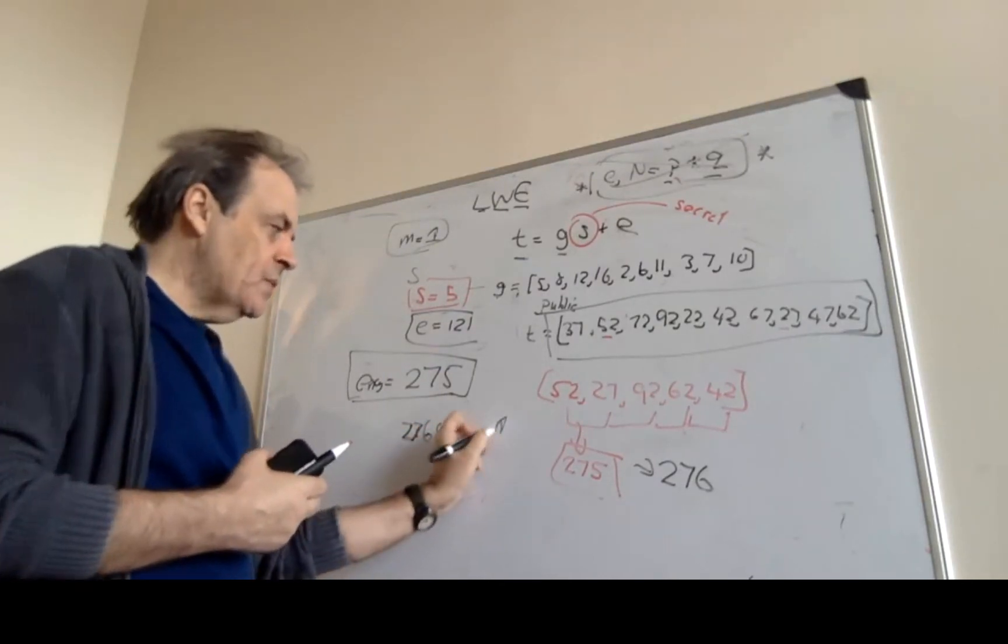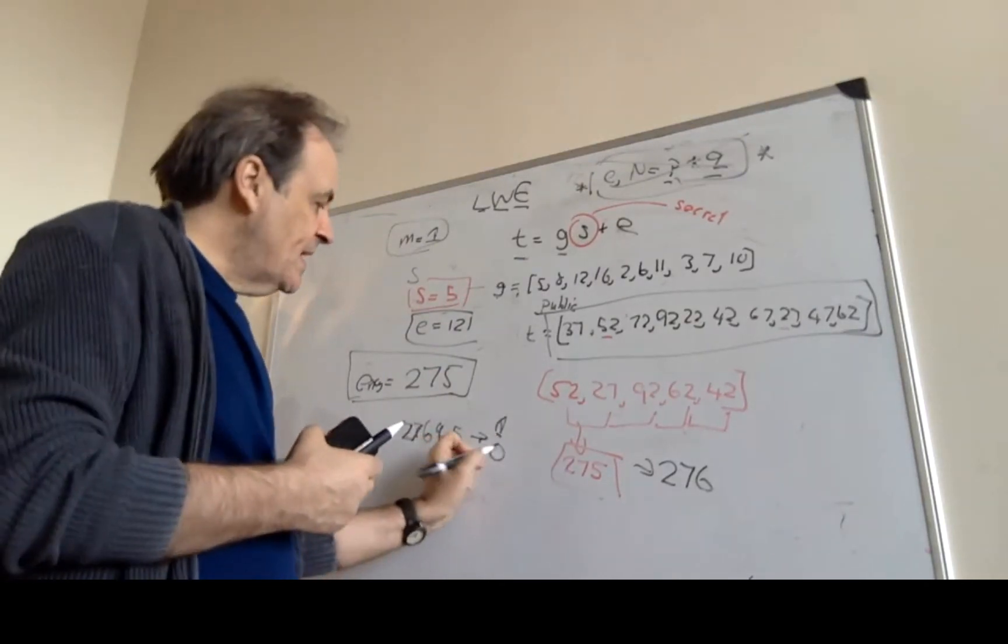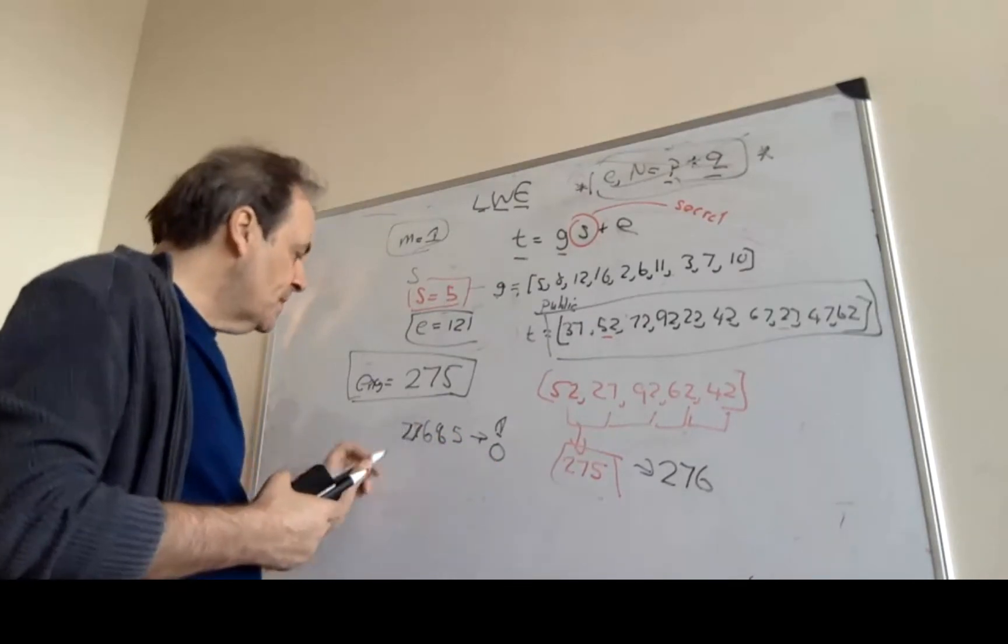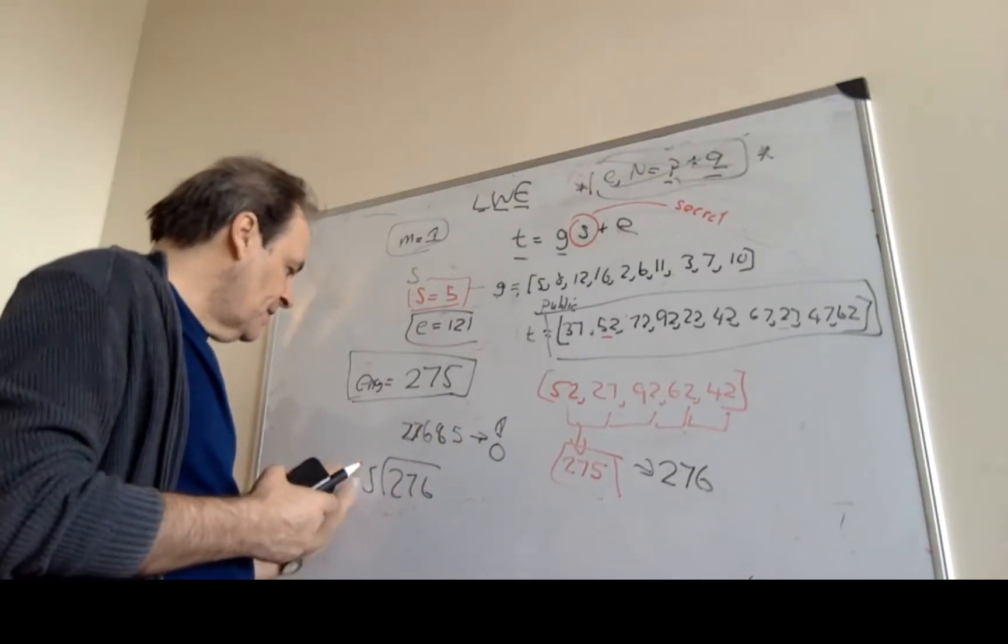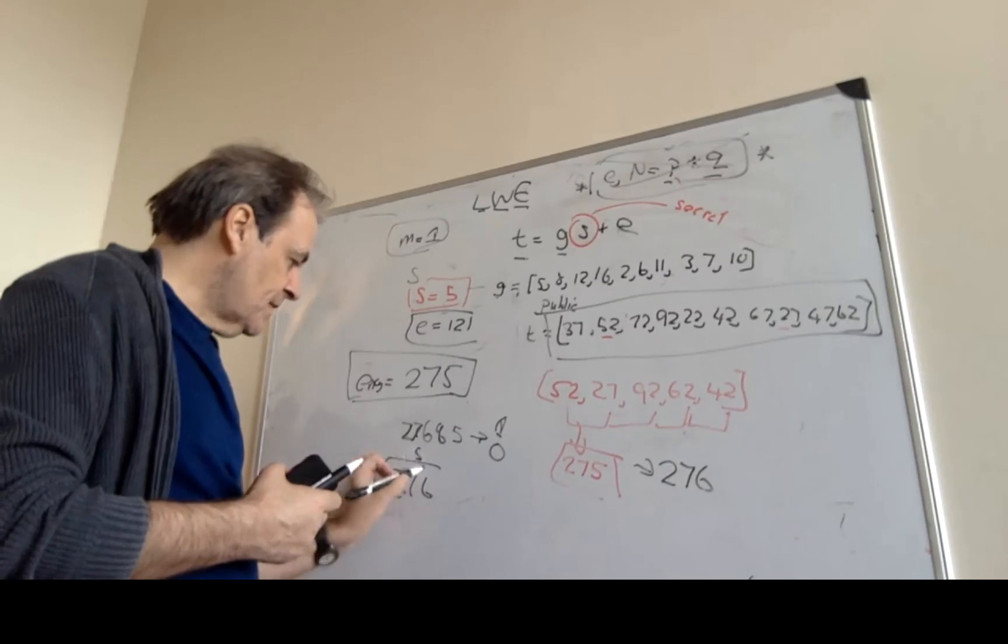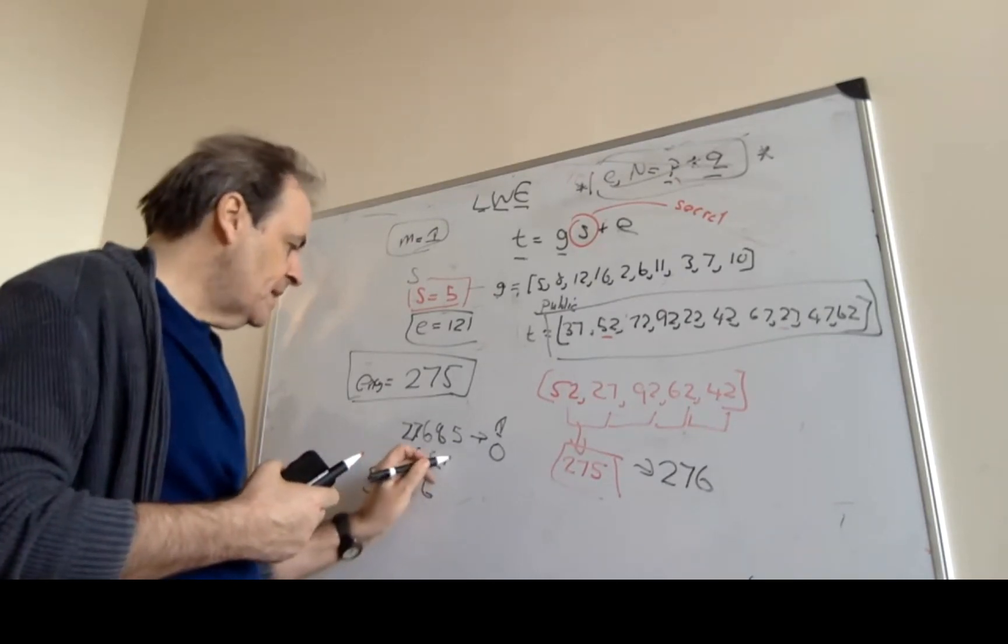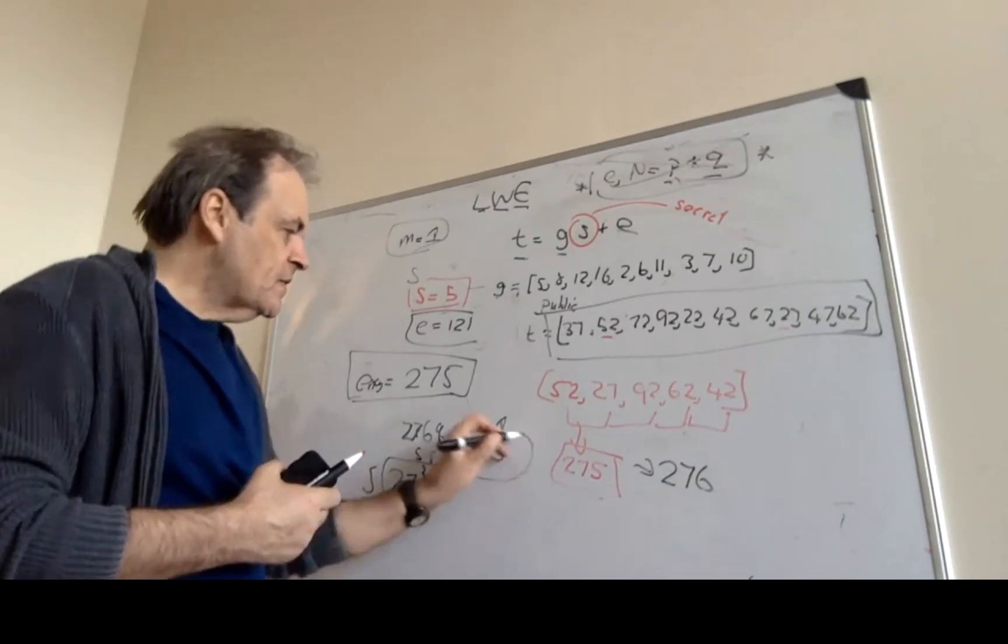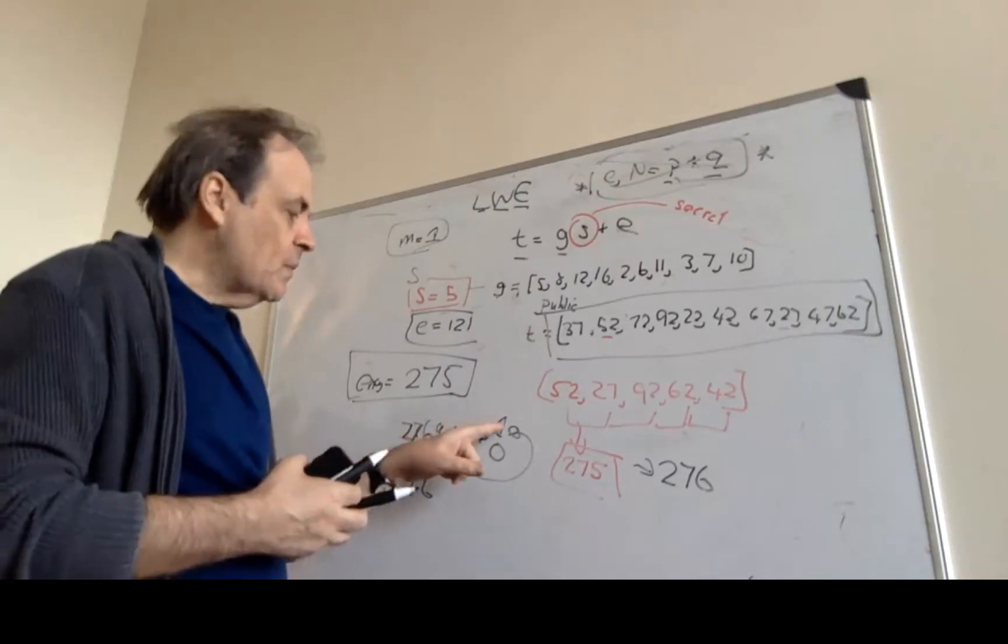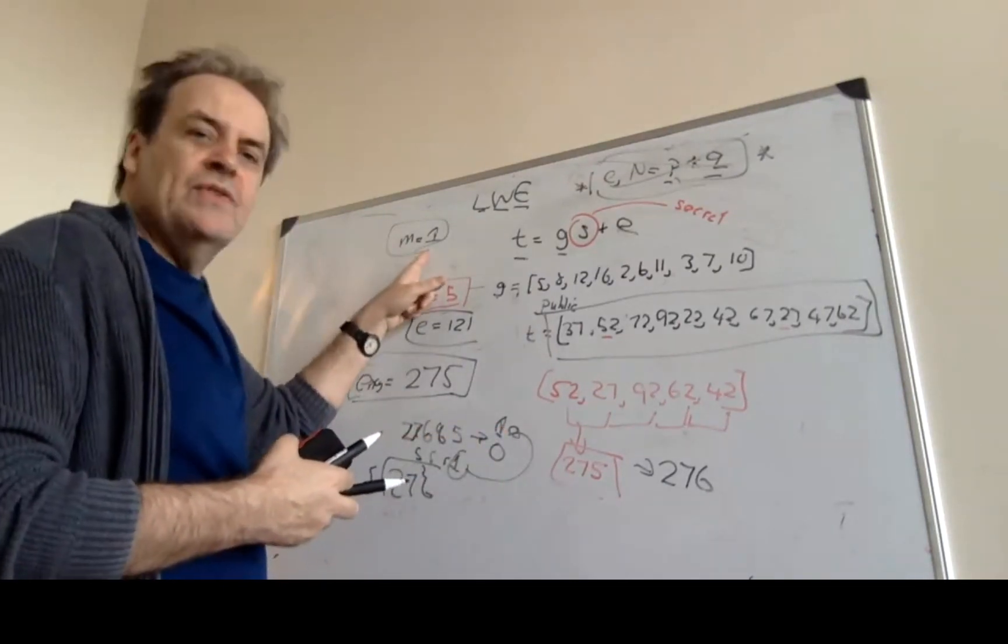If the value is a 1, we transmit a 1. If it's a 0, we transmit a 0. So 276 divided by 5 gives us 55 remainder 1. So we can see that the value is a 1 that we actually sent, which is true.